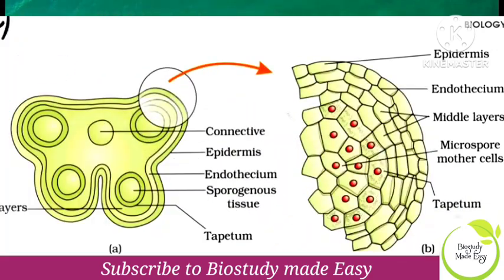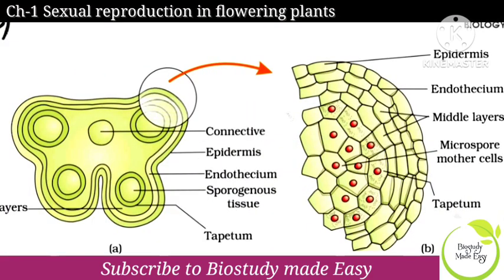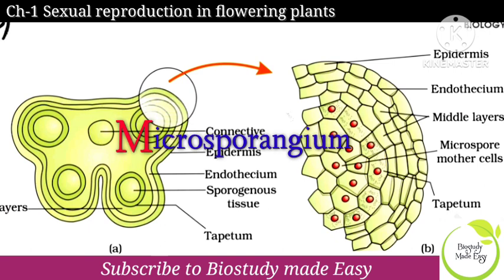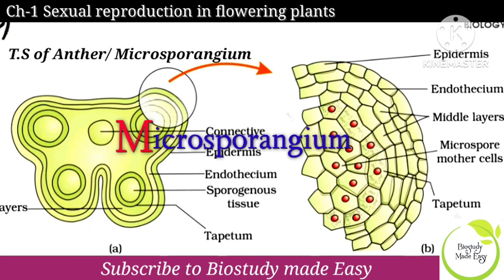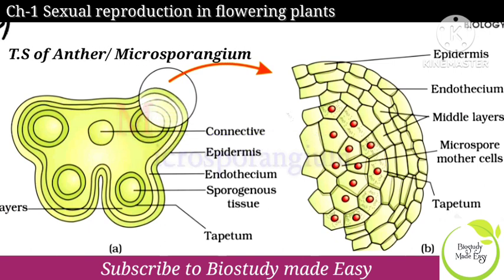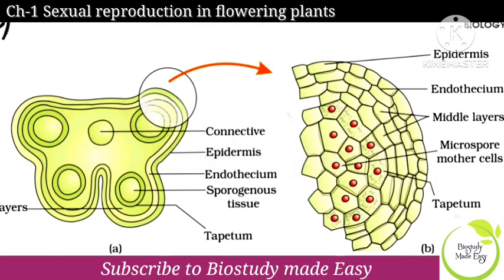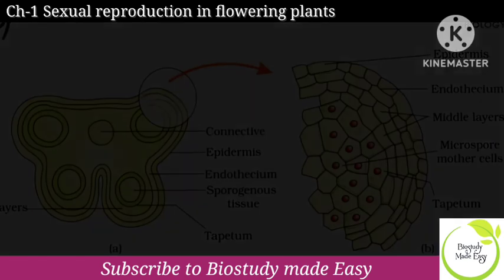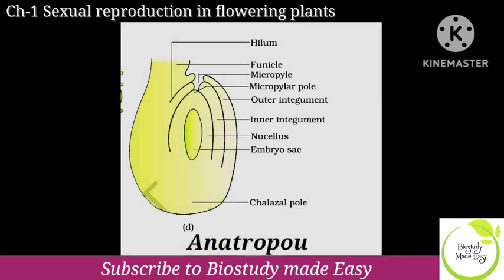First chapter is the Sexual Reproduction in Flowering Plants chapter. First, T.S. of Anther, i.e., Microsporangium diagram — three marks and five marks. Next diagram is the Anatropous Ovule diagram, again five marks.